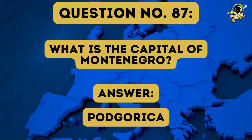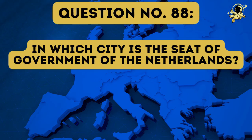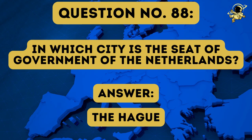Question number eighty-seven: What is the capital of Montenegro? And the answer to question number eighty-seven is Podgorica. Question number eighty-eight: In which city is the seat of government of the Netherlands? The answer to question number eighty-eight is The Hague. It's quite possible that someone said Amsterdam, but Amsterdam is the capital — the seat of government is indeed The Hague.